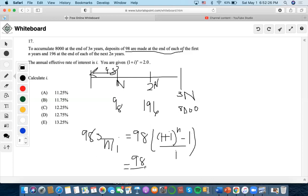Now we still need to accumulate it to 3N. So there are 2N years left from N to 3N. 3N minus N is 2N. So we're going to do 1 plus I to the 2N.